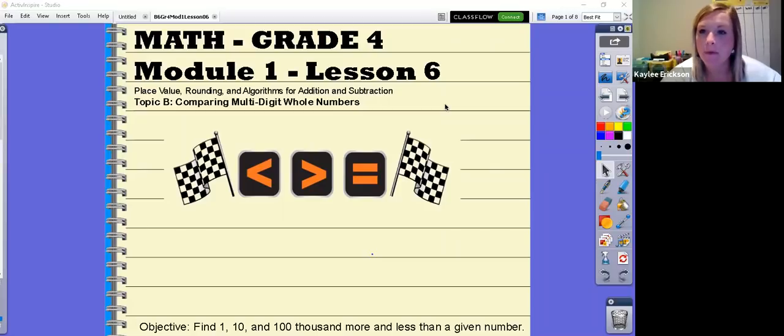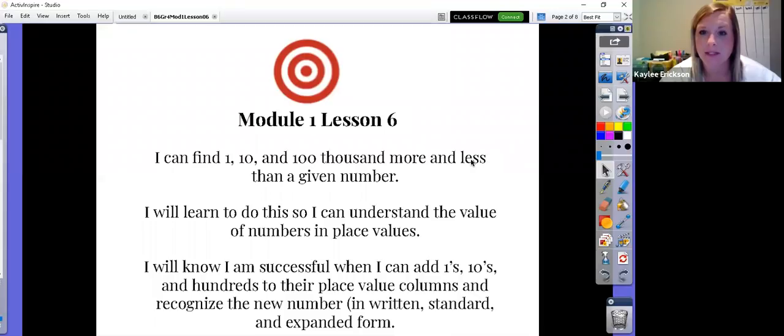We're still working on topic B that compares multi-digit whole numbers. But today, we're going to be finding 1, 10, and 100,000 more or less than a given number. Sounds like really big numbers. I think you're going to be surprised at how simple this can be when you use your place value chart.